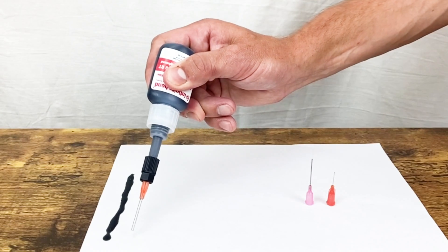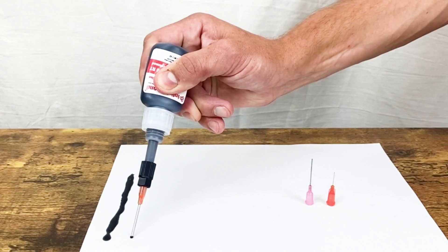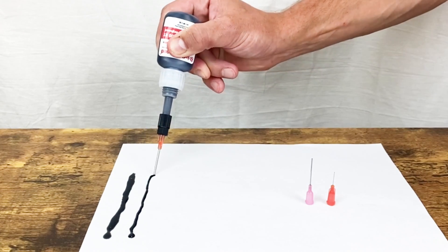This form fit connection ensures none of the adhesive will leak from the bottle and creates a clean, precise bead of material.